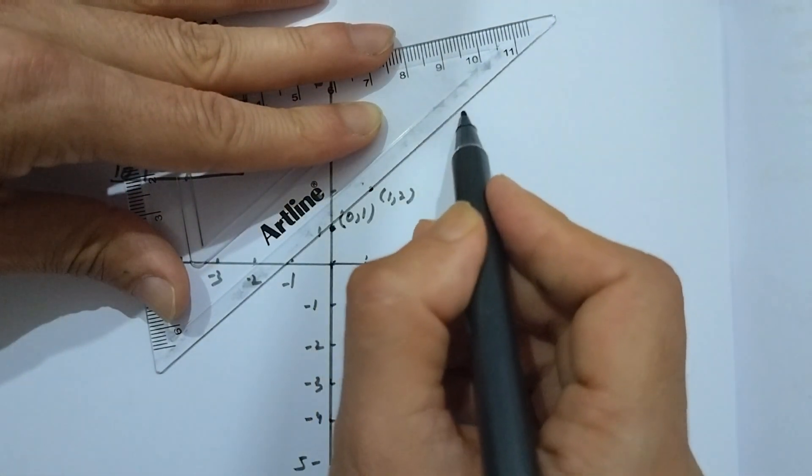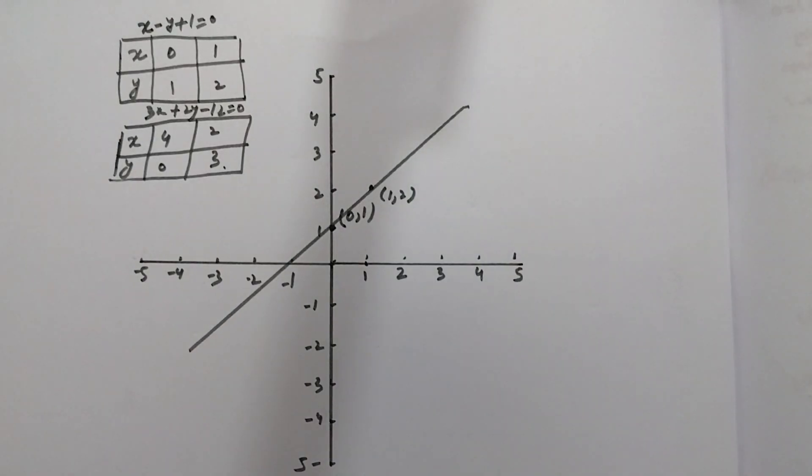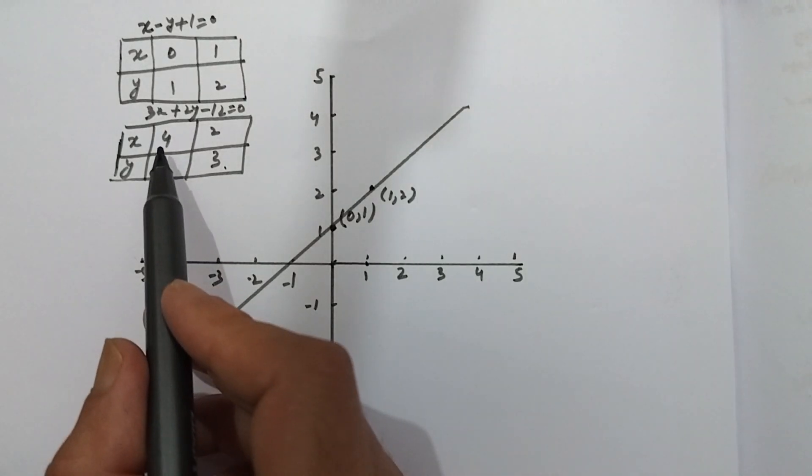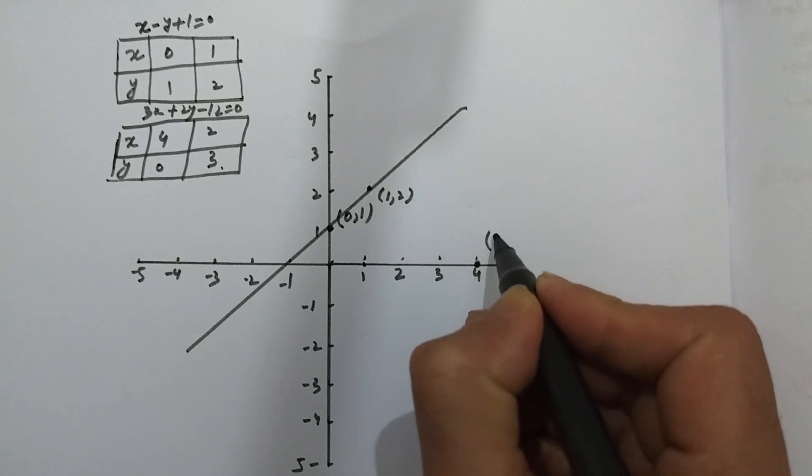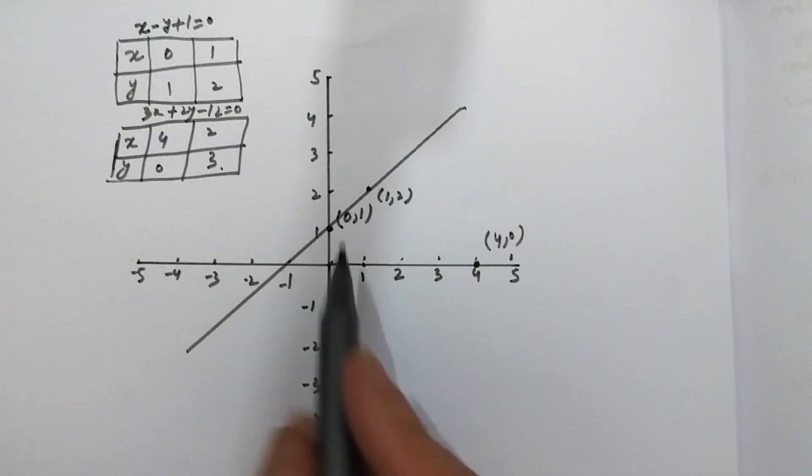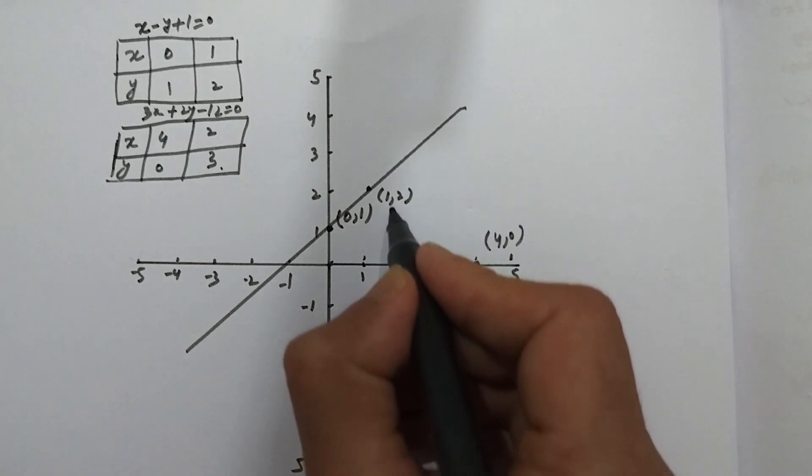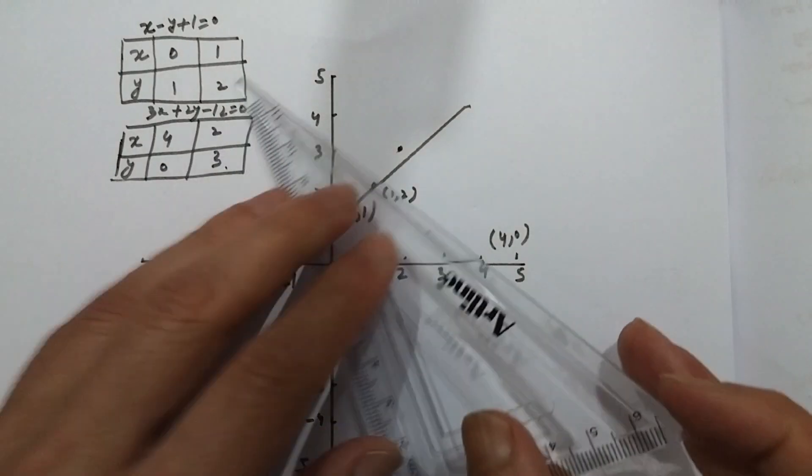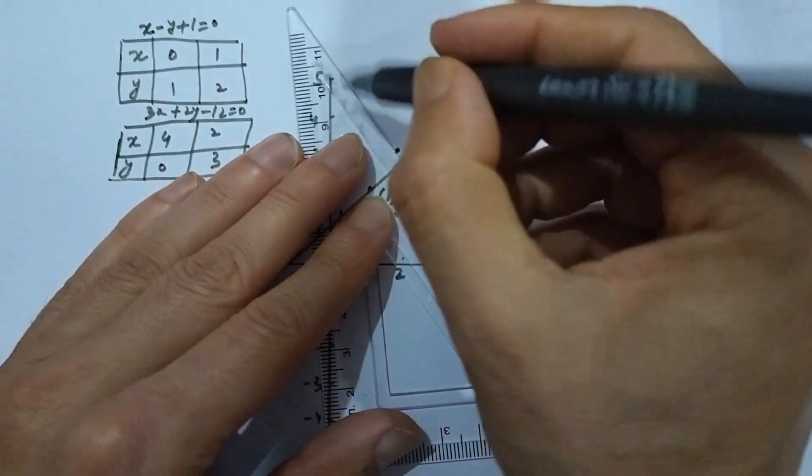Now plotting the second equation line. For x is 4, y is 0, we get the point 4 comma 0. For x is 2, y is 3, we get 2 comma 3. We plot these points.